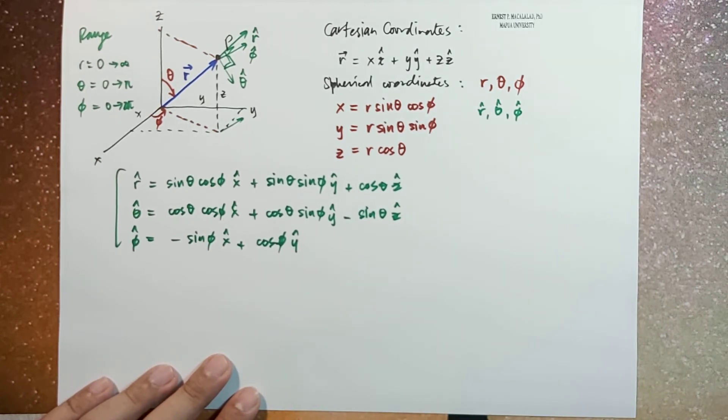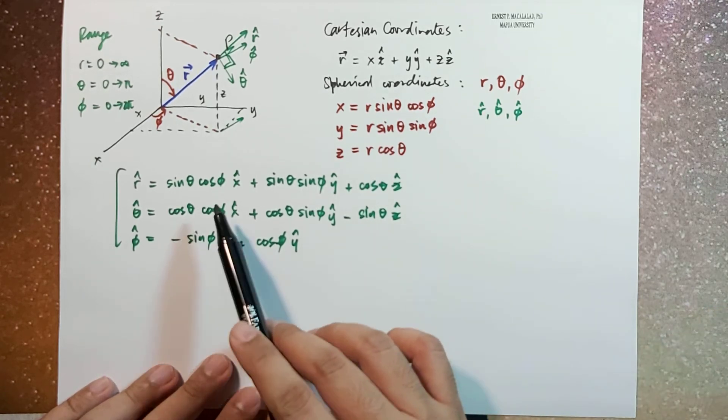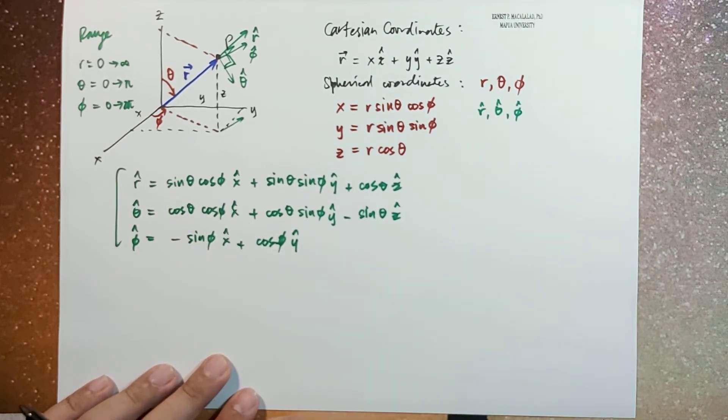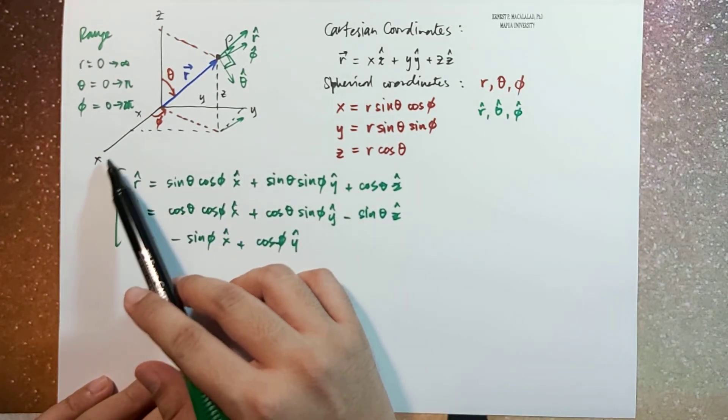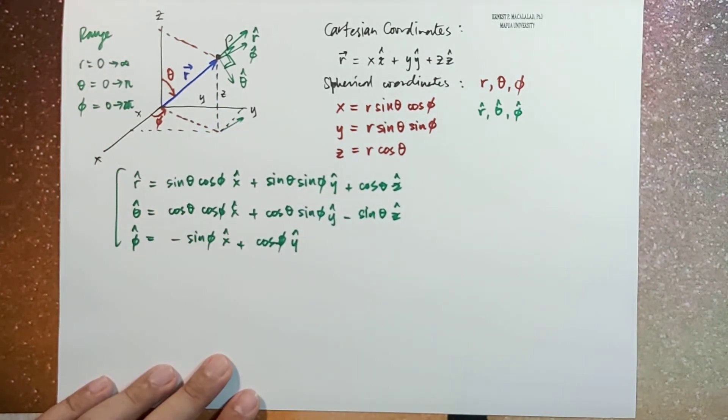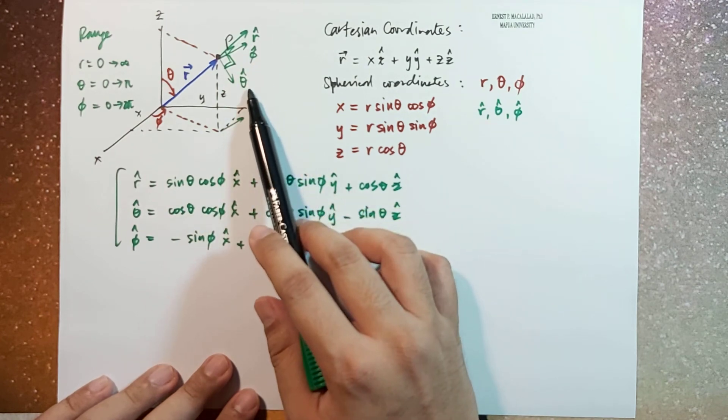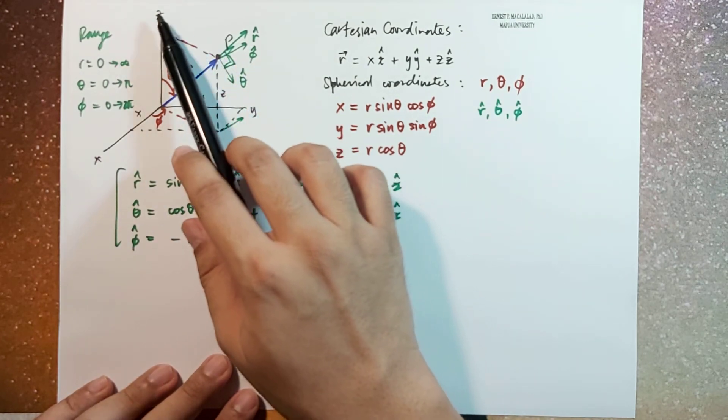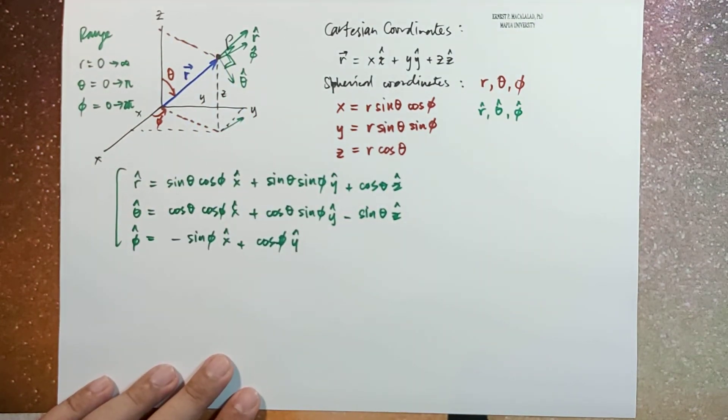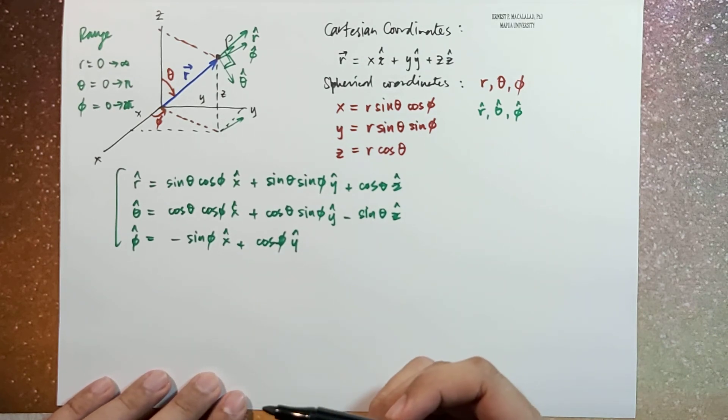Now it's important to notice that the unit vectors r-hat, theta-hat, and phi-hat always change depending on the components theta and phi. In other words, unlike the x-hat, y-hat, and z-hat unit vectors which are fixed, the r-hat, phi-hat, and theta-hat change as the position changes.